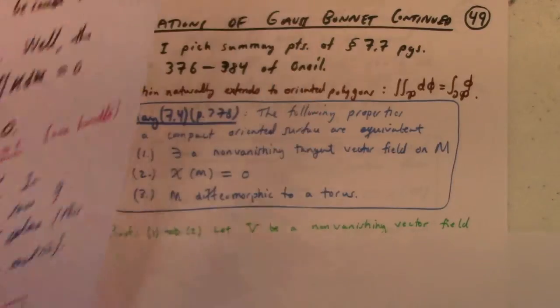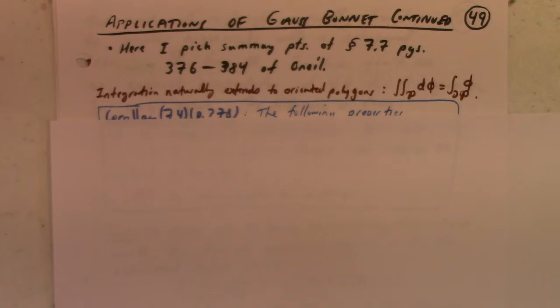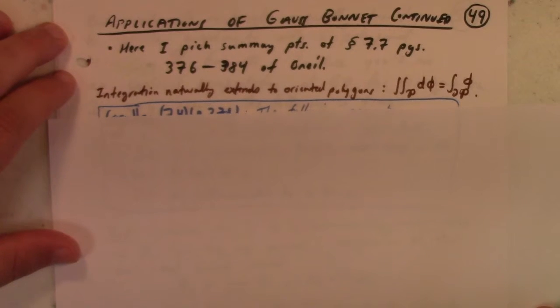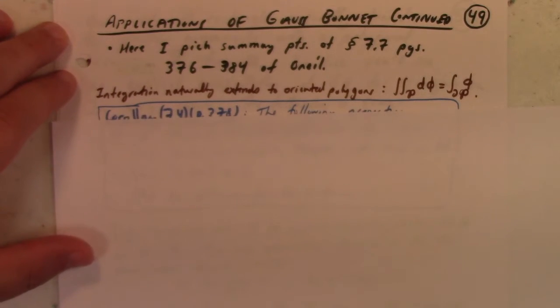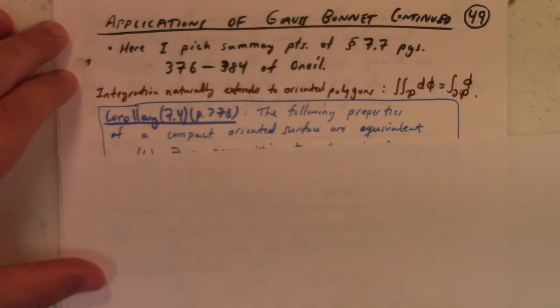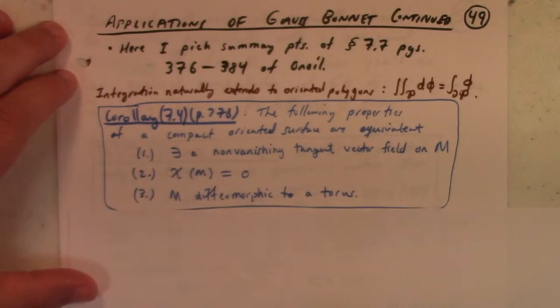I'm picking through some of my favorite bits of section 7.7, which is pages 376 to 384 of O'Neill. Here's the greatest hits. Corollary 7.4: the following properties of a compact oriented surface are equivalent.